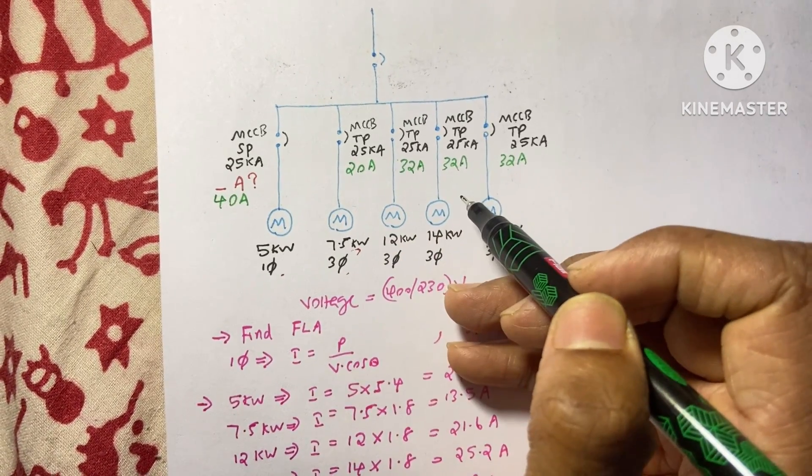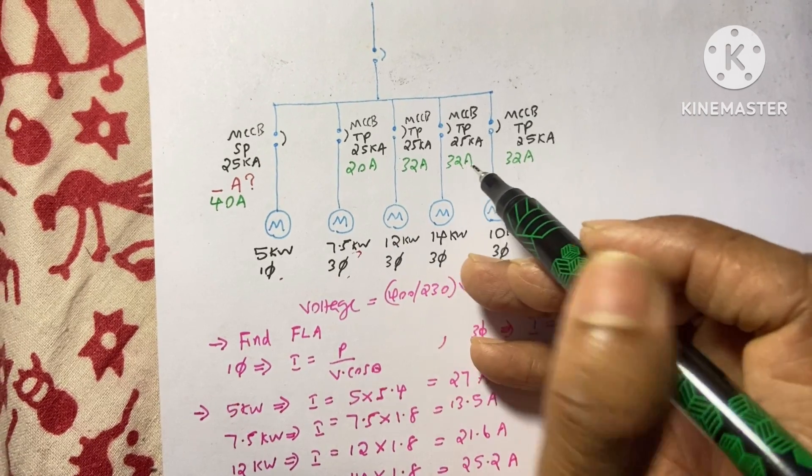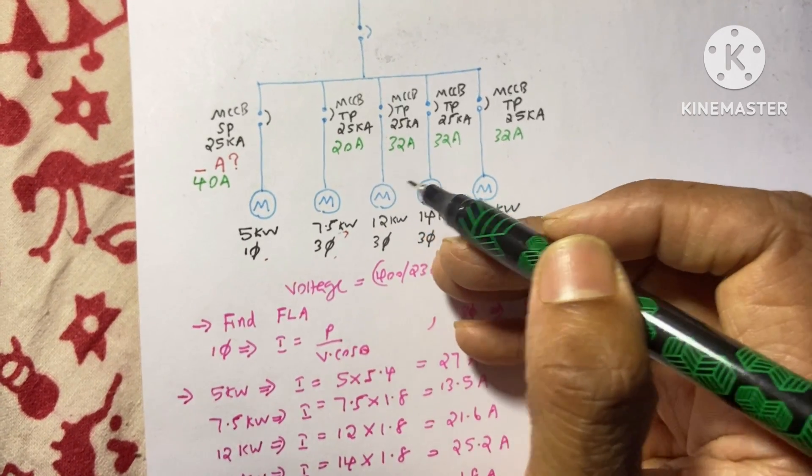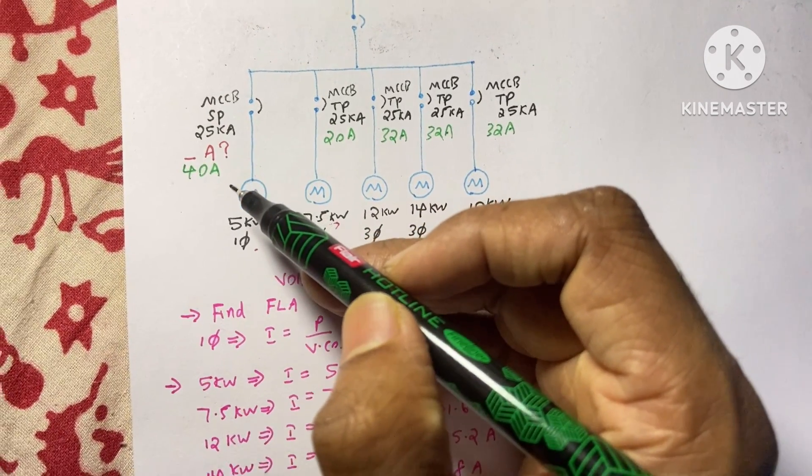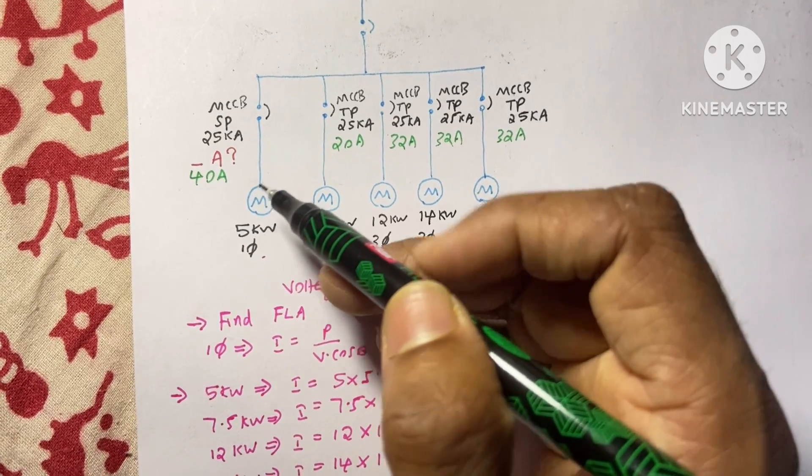And one thing I want to say. In this single line diagram I did not mention any starters and overload relays. We must use overload relays and starters for the motors. In this video my intention is only to find the MCCB breaker size. I hope you got my point.